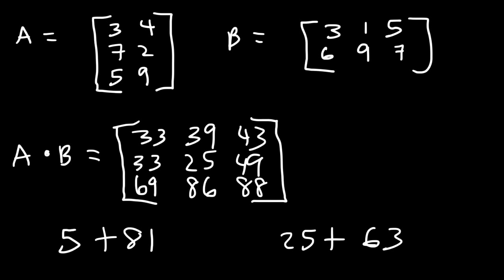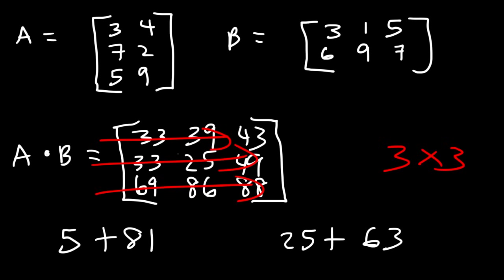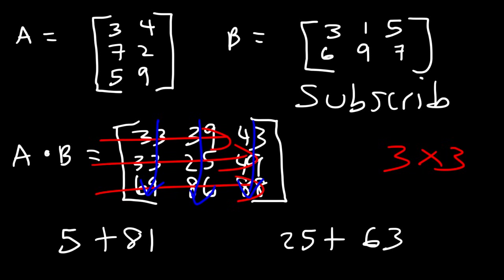As you can see, we have a 3 by 3 matrix with 3 rows and 3 columns. So now you know how to multiply one matrix by another matrix. If you liked this video feel free to subscribe to this channel, and don't forget to check out the other videos in the description section. Thanks for watching.